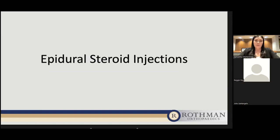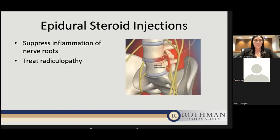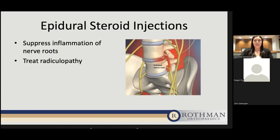To review epidural steroid injections: the goal is to suppress inflammation of the nerve roots and treat radiculopathy. Radiculopathy is irritation to a nerve root in the neck or low back. Typically, patients present with radiating pain either down their arm or leg, with or without neck or back pain. Patients can also have weakness and sensory changes such as tingling and numbness in the same distribution. The main issue is the inflamed or irritated nerve root.